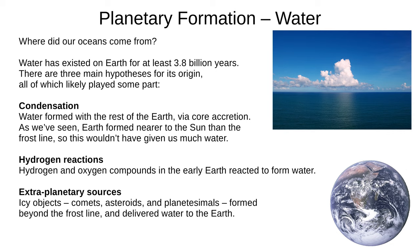The three hypotheses are: condensation — water formed with the rest of the Earth via core accretion, though Earth formed nearer to the Sun than the frost line, so this method can't account for much water; hydrogen reactions — hydrogen and oxygen compounds in the early Earth reacted to form water; and finally, extra-planetary sources — icy comets, asteroids and planetesimals formed beyond the frost line and delivered water to the Earth by collision.